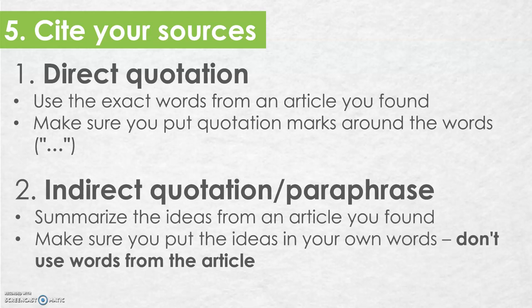The second way that you can use this information is through an indirect quotation or a paraphrase. You can summarize the ideas from an article that you found and put those ideas into your research paper, but you have to make sure that you put the ideas in your own words — you can't use the words from the article. As soon as you use the author's words, you have to make sure that you put those words in quotation marks.